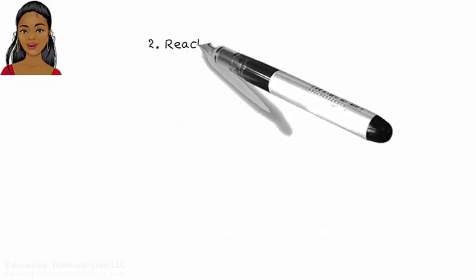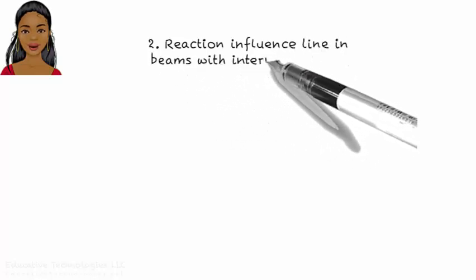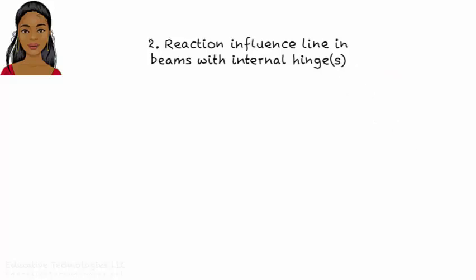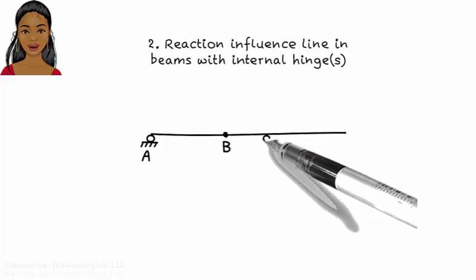Drawing reaction influence lines this way becomes even more interesting when the beam has one or more internal hinges. For example, consider this beam. This is a statically determinate beam with a hinge at B.